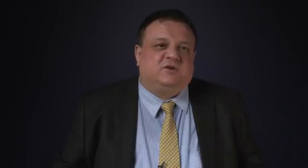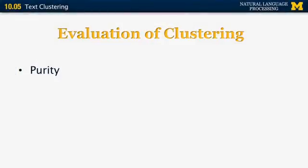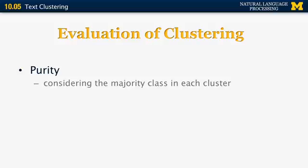How do we evaluate clustering? In all the cases so far, we assumed we know the number of clusters in advance. If we don't know the number of clusters, we can try different values for k and figure out which clustering gives better performance. Here are two ways to evaluate clustering performance: the first technique is called purity, based on the majority class in each cluster, and the second is the so-called RAND index.